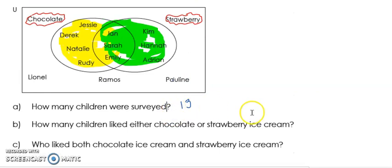The next question says, how many children liked either chocolate or strawberry ice cream? So we're counting all the children who, even if they like strawberry or if they like chocolate ice cream, we're going to count them. So those would be the children that are in the chocolate set and the strawberry set. So let's count them. 1, 2, 3, 4, 5, 6, 9, 10. So the answer to that question would be 10.